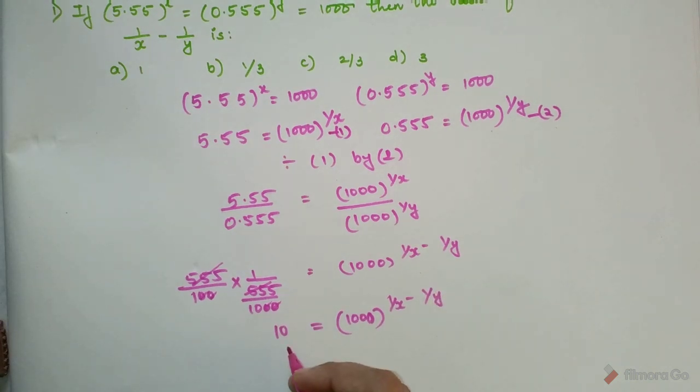Now over here we have a problem, why? Because we need the base to be same, only then the indices can be same. But the good news is we can write 10 in terms of 1000 as well. How? I can write 10 as 1000^(1/3), cube root.